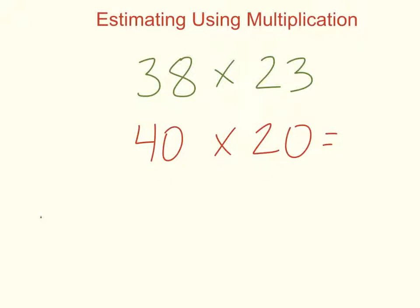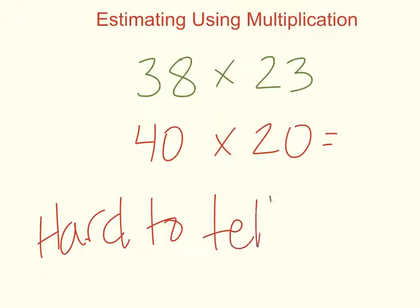I think it's hard to tell. And the reason for that is the 38 we rounded up to 40, but the 23 we rounded down to 20. So we had one number go up and one number go down. And that means it's going to be hard to tell if this is an over or underestimate.